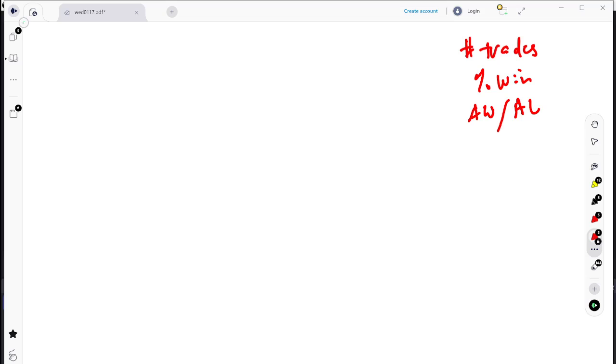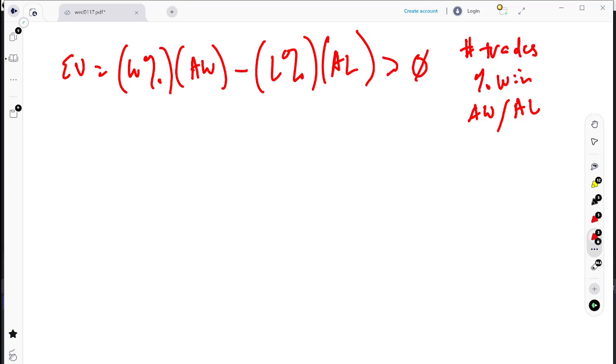The formula for such is pretty forward. So expected value is going to equal your winning percent multiplied by your average winner, subtract your losing percent multiplied by your average loser. And then you're going to want this to be greater than zero at that point.